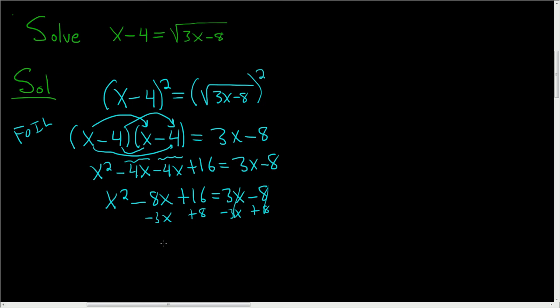So these cancel, these cancel. We end up with x squared minus 11x plus 24 equals 0.